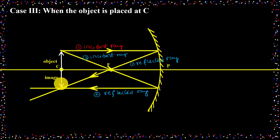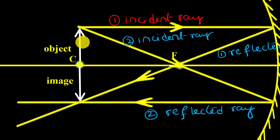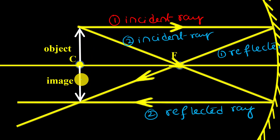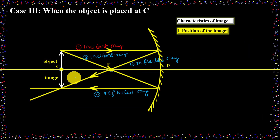After getting the ray diagram, we need to write the characteristics of the image. The first one is the position of the image. If I observe thoroughly, the object and the image are at the same position. The object is at C and the image is also at C. Only in this case, the object position and image position are the same — object distance and image distance both are the same. So the position of the image is at C, or double the focal length.